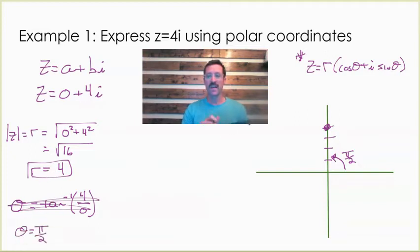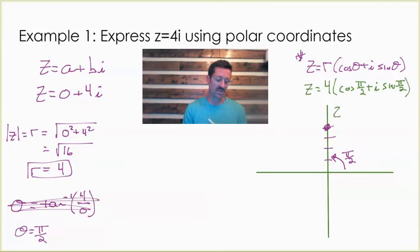We found r, we found theta, now we're ready to write our complex number in polar form. Our complex number is equal to our radius, then cosine of pi over two plus i sine pi over two. Since cosine of pi over two is zero, you could leave that part out and just leave it as z equals four times i sine pi over two.